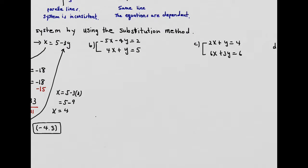Let's look at the next example using substitution. In order to use substitution, I need to solve one equation for a variable. Looking at the first equation, I'd have to divide to isolate x or y. But the second equation has y with a coefficient of 1, so I don't have to divide by any number when solving for y.